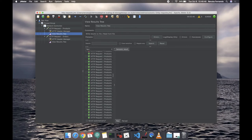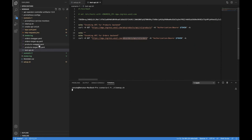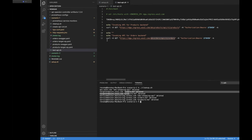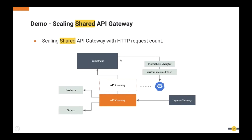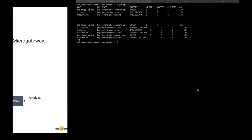Now let's move to the second scenario where we are going to scale the backend in sidecar mode. In this scenario, the microservices are not exposing custom metrics — the whole pod is scaled with metrics exposed by the micro gateway. Previously we collected metrics from the micro gateway. Let's move to Scenario 2.